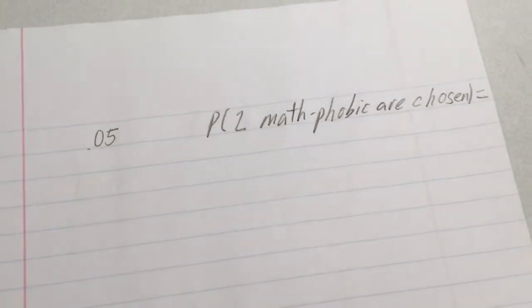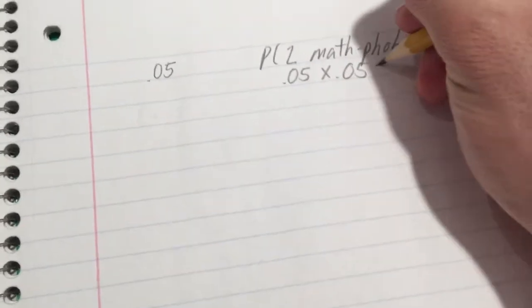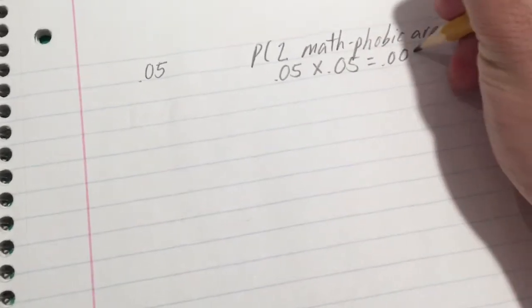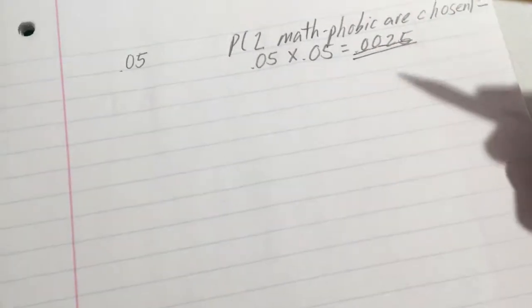So what we simply have to do is multiply the proportion, 0.05, by itself, 0.05, which gives us 0.0025. So that would be the probability that two math-phobic people are randomly selected from the population.